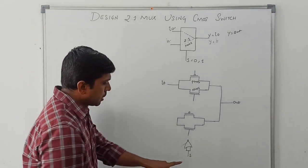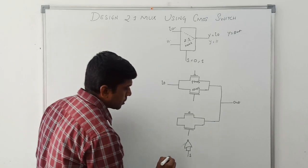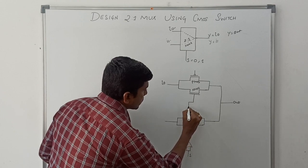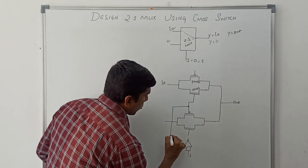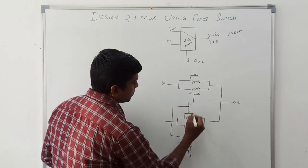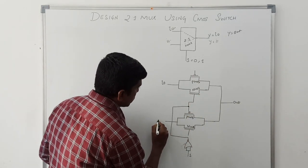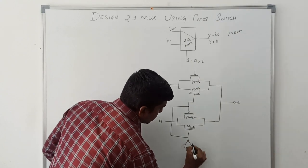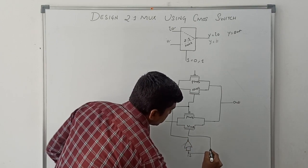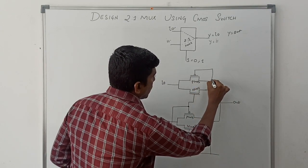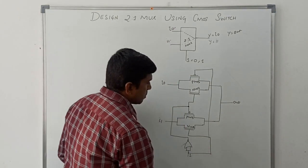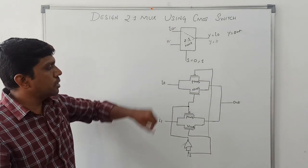S is the selection line. This S signal is given to the NOT gate input. The output of the NOT gate is S-bar, which is connected to the PMOS and NMOS of the first switch. This one is the I1 input variable. The uncomplemented term S is connected to the NMOS and PMOS of the second switch. It is a simple structure — 2-to-1 mux using CMOS switches.